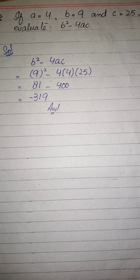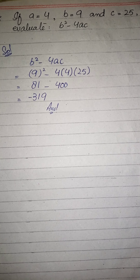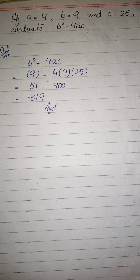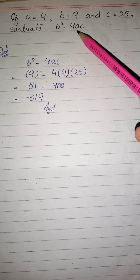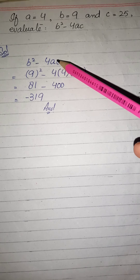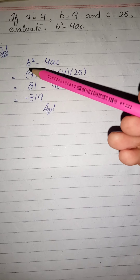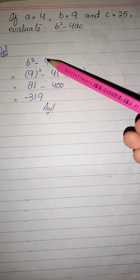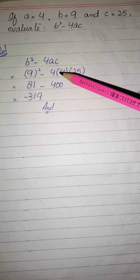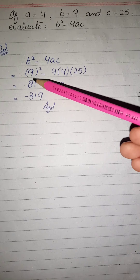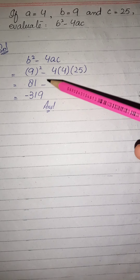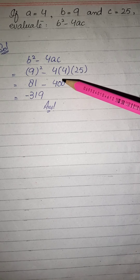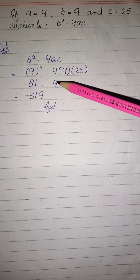اب question number 2: if a equals to 4, b equals to 9, and c equals to 25, evaluate b square minus 4ac۔ b کی value 9 ہے تو 9 square، minus، 4 ضرب a کی value 4 ضرب c کی value 25۔ 9 square equals 81۔